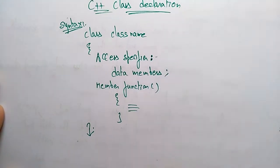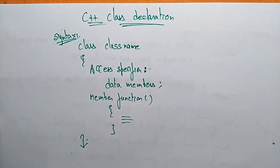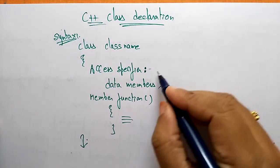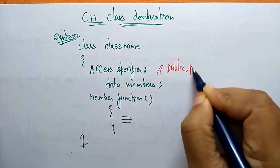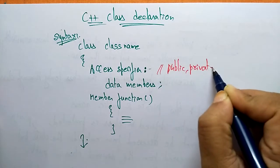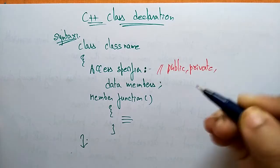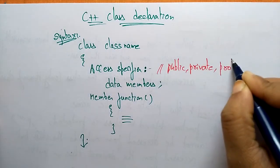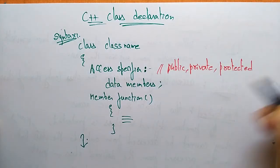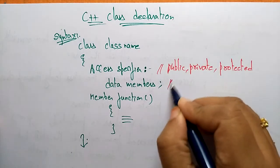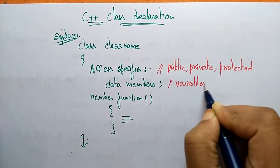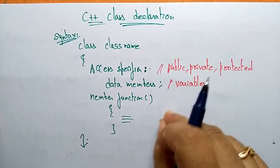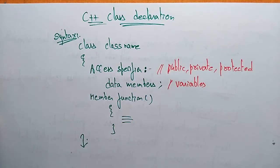So this is the syntax of the class. I explained about the access specifiers like public, private, and protected. You can make your data as public, private, and protected. The different data members are nothing but the variables. Based on your access specifier, the variables can be accessed within the class or outside the class.